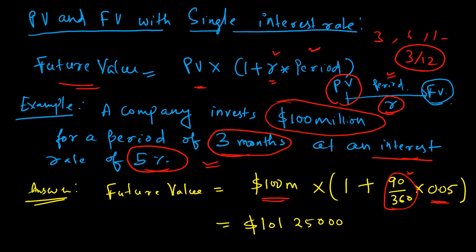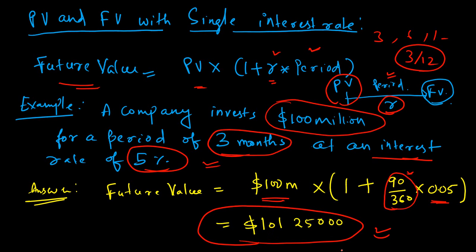Using the formula, Future Value = 100 million × (1 + (90/360) × 0.05). When we calculate this expression, we find the future value. This amount after three months — with a risk-free rate of 5% — is exactly equivalent to 100 million dollars today. Working backwards from this future value gives us back the 100 million present value.